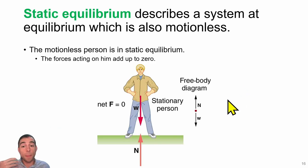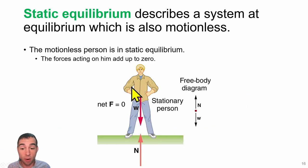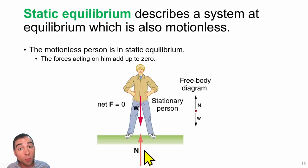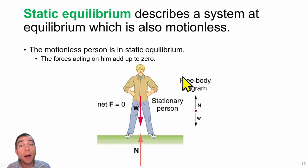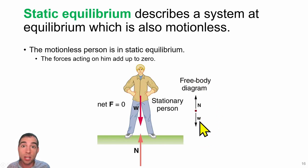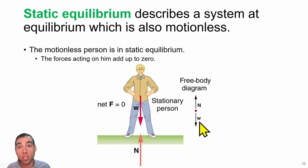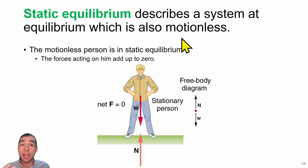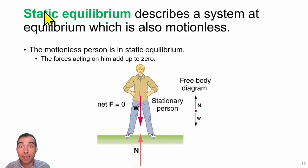For example, we can think about a person standing on the ground. They feel a gravitational force pulling them down, but a normal force pushes them back up. If we were to draw the free body diagram, we would see that the gravitational force equals the normal force and they are in opposite directions, so they cancel out. For an object at rest or motionless, we call this static equilibrium.